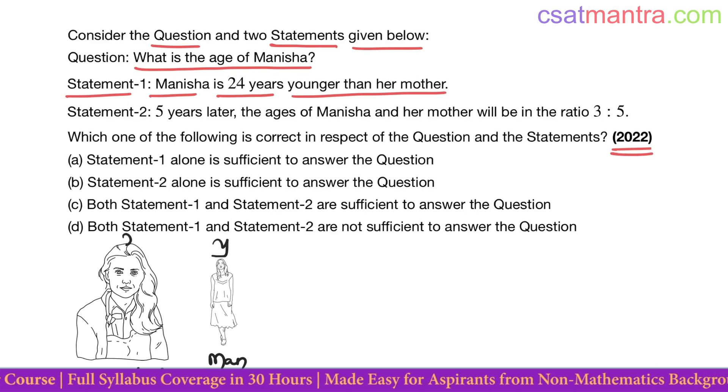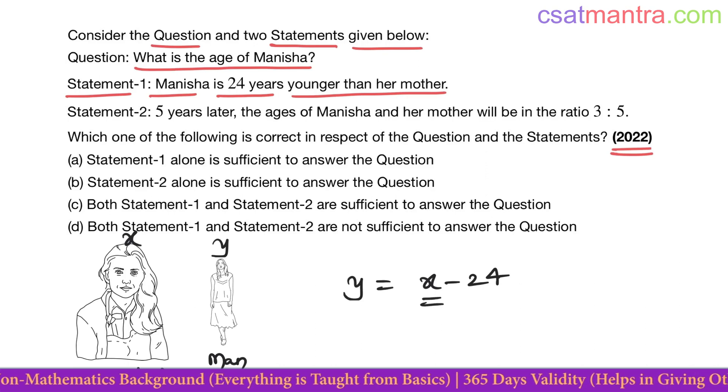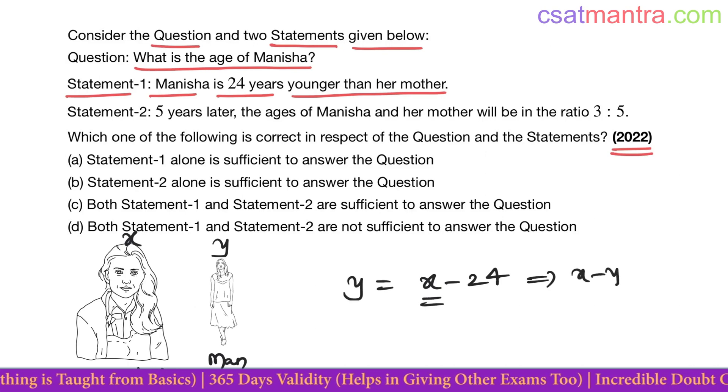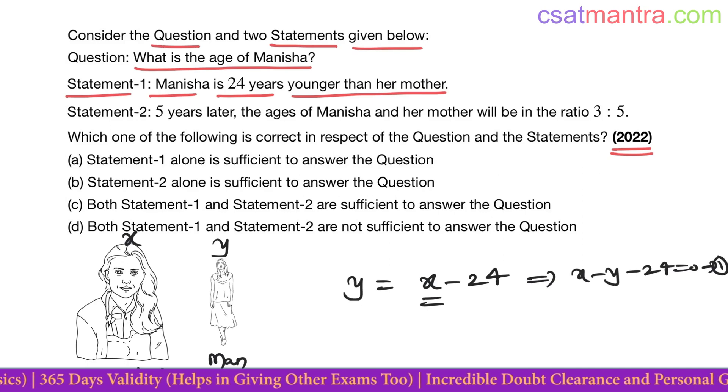Mother's age is x. Manisha is 24 years younger than her mother, so Manisha's age is x minus 24. Her mother's age is x. 24 years younger than her mother means x minus 24. From this we can say x minus y minus 24 equals zero. Equation 1.